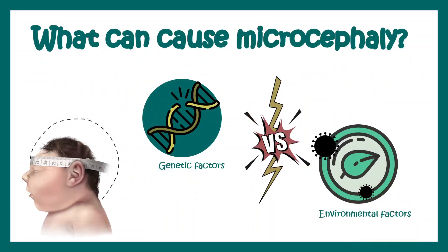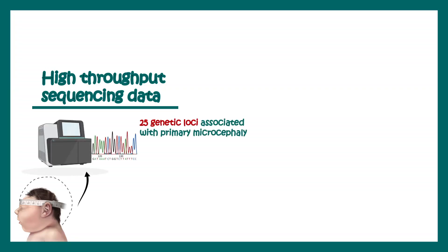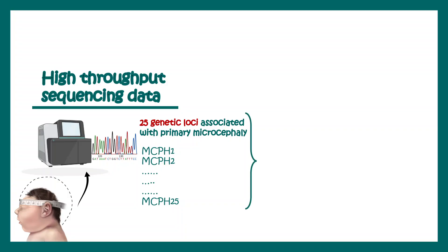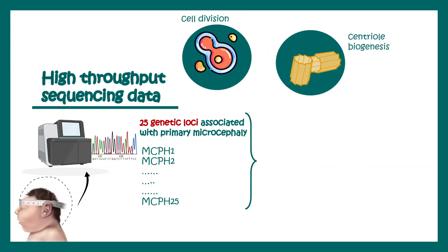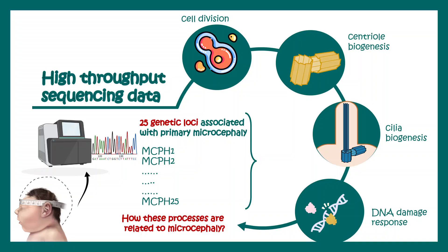When it comes to the causes of microcephaly, there could be genetic as well as environmental factors involved. High-throughput sequencing data has characterized several mutations associated with microcephaly, and many of these mutations abrogate different cellular pathways. 25 genetic loci have been associated with primary microcephaly, known as MCPH1 through MCPH25. The genes present in these loci are involved in cell division, centriole biogenesis, cilia biogenesis, and DNA damage response — all taken together, they are involved in the kinetics of cell division and cell growth.